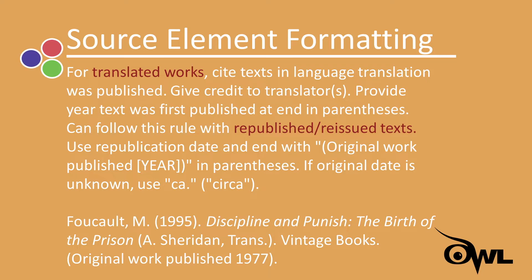For translated works, cite the text in the language in which the translation was published. That is, if you are citing a text in English that was originally published in French, you should cite the English translation you used. In this case, you should also give credit to the translators. For these texts, also provide the year the text was first published in its original language — this information is placed at the end of the reference in parentheses. You can follow the same rule with republished or reissued texts: use the date of re-publication for the date element, then at the end of the citation entry add 'Original work published [year]' in parentheses. If the original date of publication is unknown, which is common for classical or ancient sources, you can use the abbreviation 'ca.', which stands for circa, to indicate the approximate creation date.